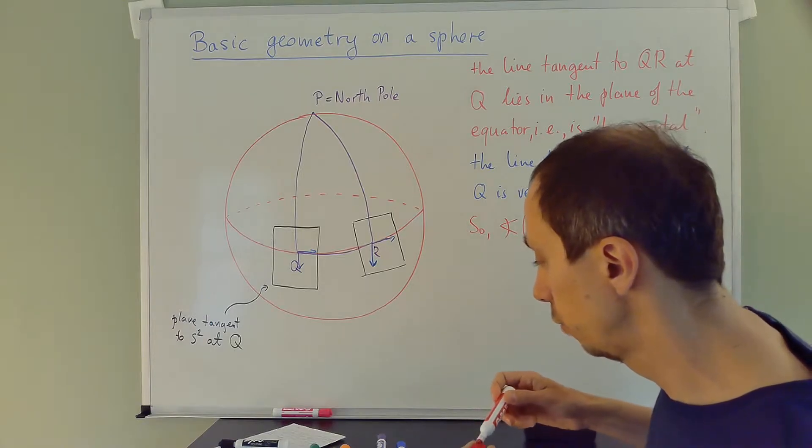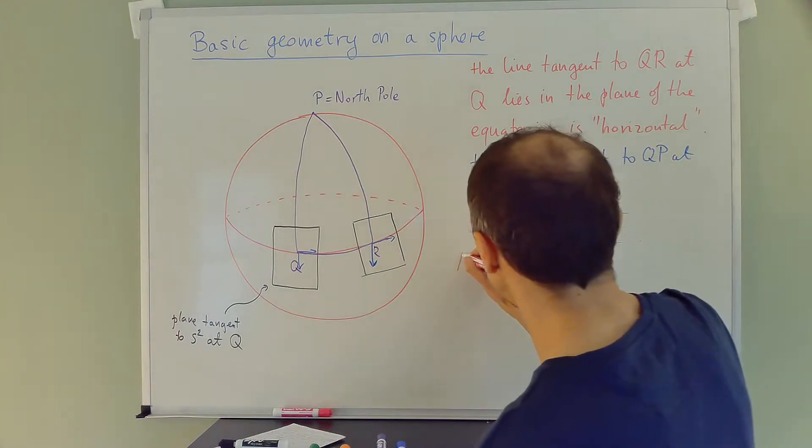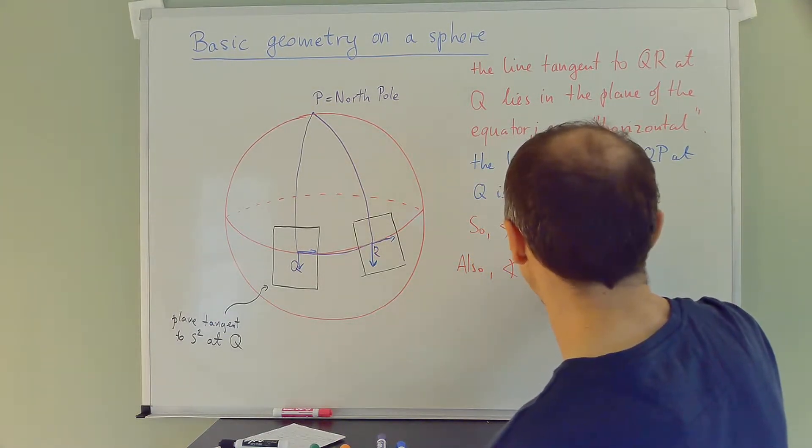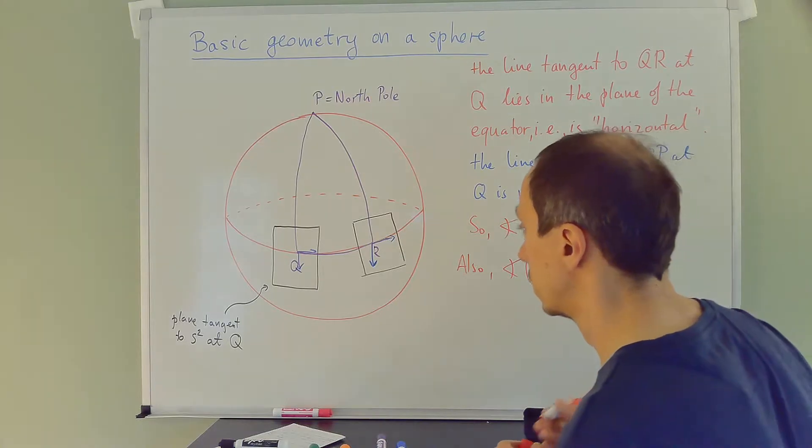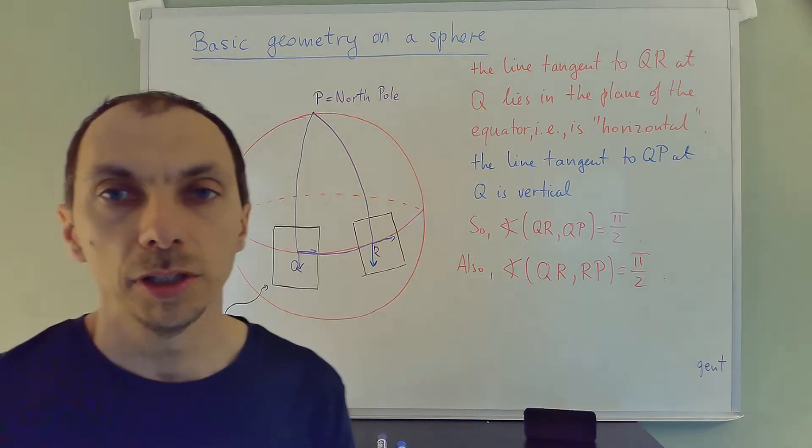In fact, these two vectors will always form a right angle as you go around the equator. So also the angle between QR and RP is π. Why did I do this? I wanted to point out to you that when you study large triangles on a sphere, they do not even approximately have the properties that we expect from triangles on the plane.